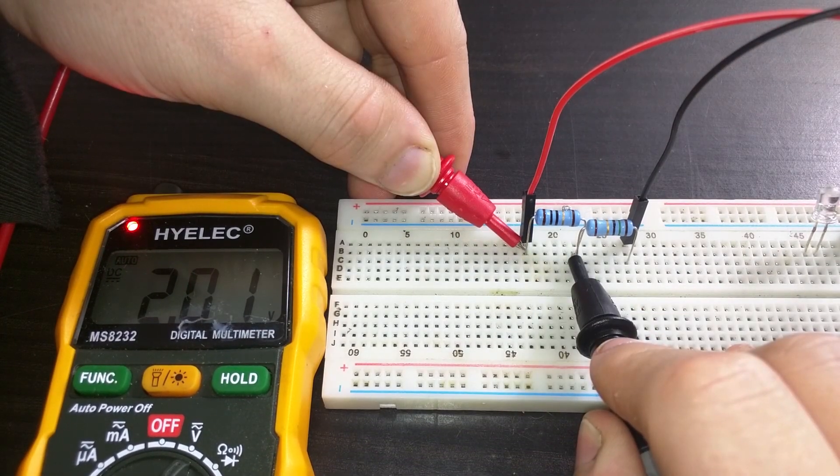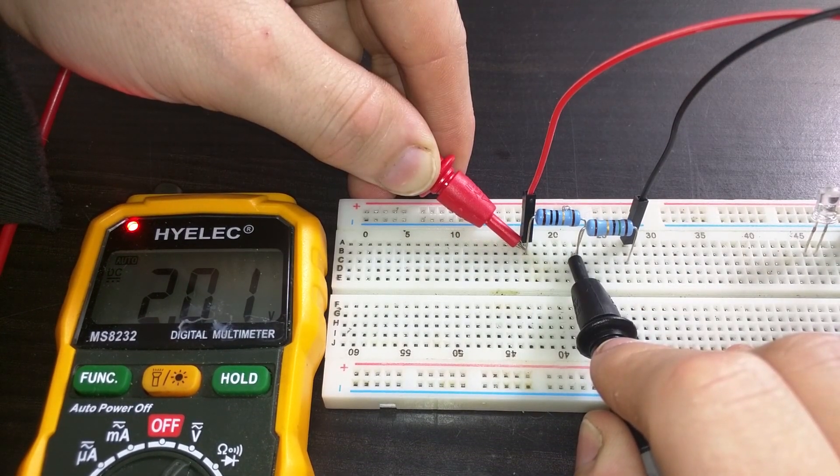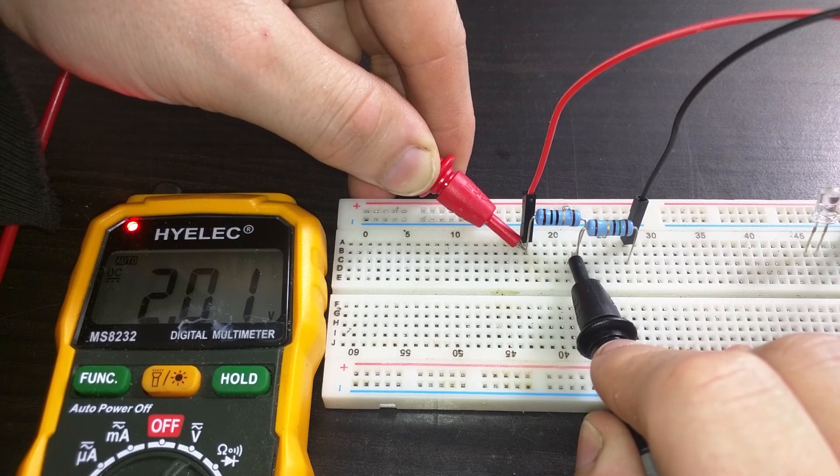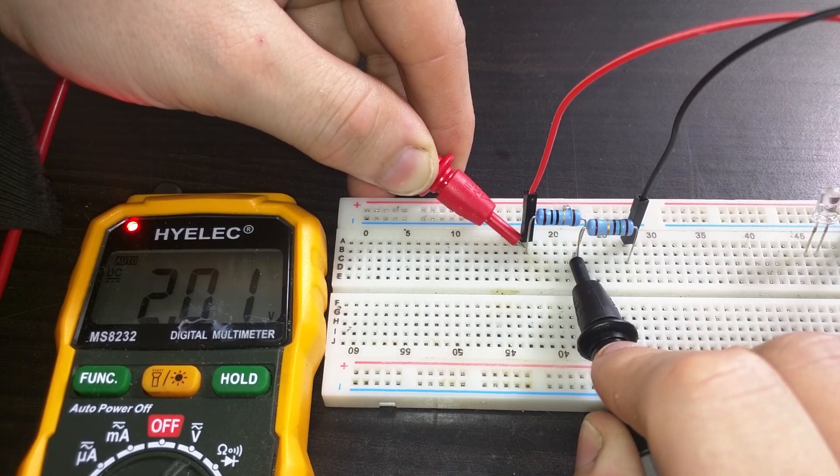If I put a voltmeter across resistor 1, you can see there I have approximately 2 volts dropped across it, which is the result that I wanted.